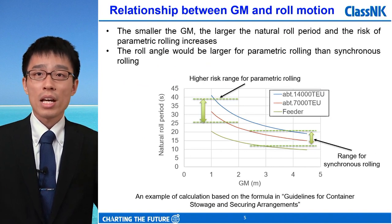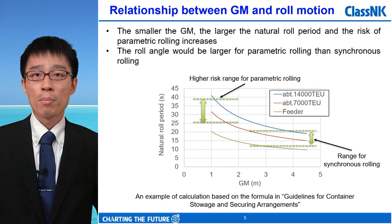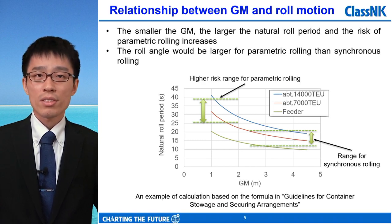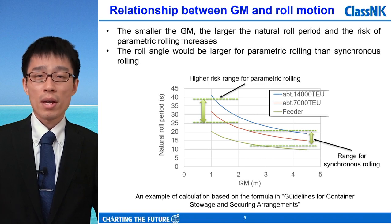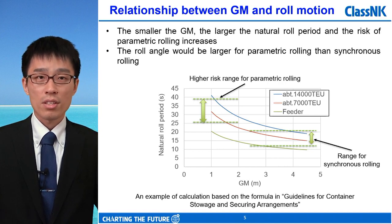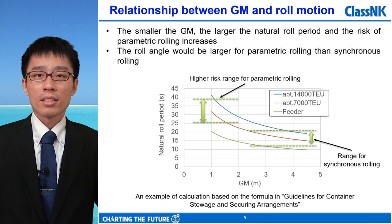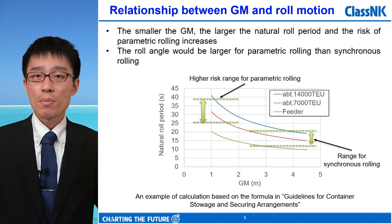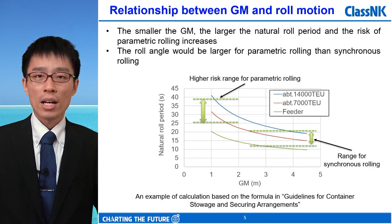The estimation of natural roll period is the most important factor for avoiding parametric rolling. This chart shows the natural roll period versus GM on the horizontal axis. GM is a very critical factor for natural roll period. This is the result assuming 14,000 TEU, 7,000 TEU, and feeder-sized container ships. You can see that the smaller the GM, the larger the natural roll period. If GM is small, the risk of parametric rolling increases. Generally, the roll angle would be larger for parametric rolling than for synchronous rolling.